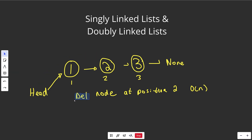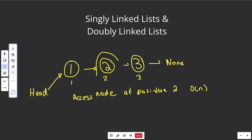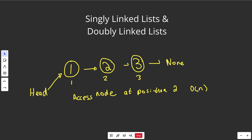Even more simply, if you wanted to just access a node at a certain position — not remove or add it, just look at what's there — you'd still have to start at the beginning and go up until that position to read that element. So again an O(N) operation.